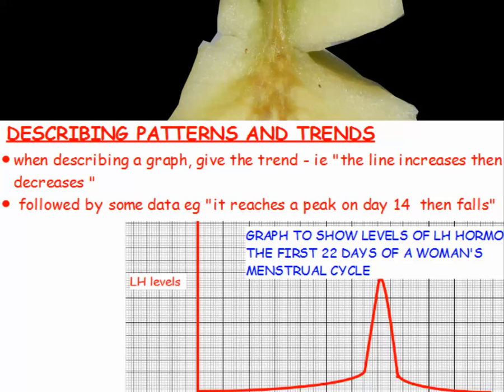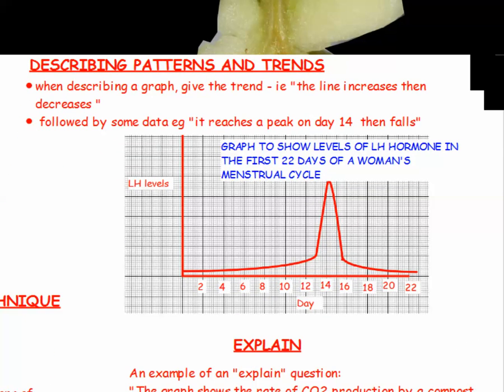Here's an example of a describe question. The question might say, describe the pattern shown by the graph. This graph shows the levels of LH hormone in the first 22 days of a woman's menstrual cycle. This would be a two mark question. The first mark would be for describing the line — saying that the line goes up and then goes down. The second mark would be for quoting a value, for example, saying that the levels of LH reach a peak on day 14.